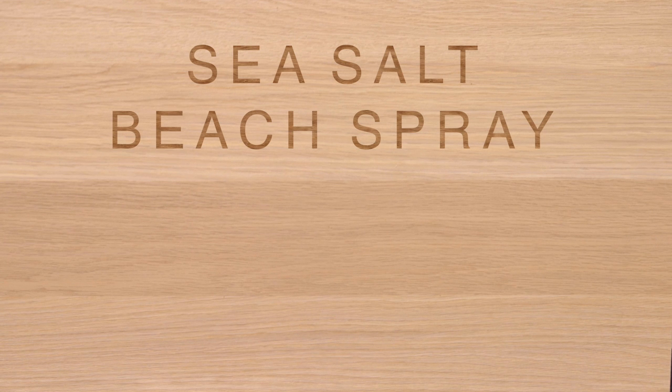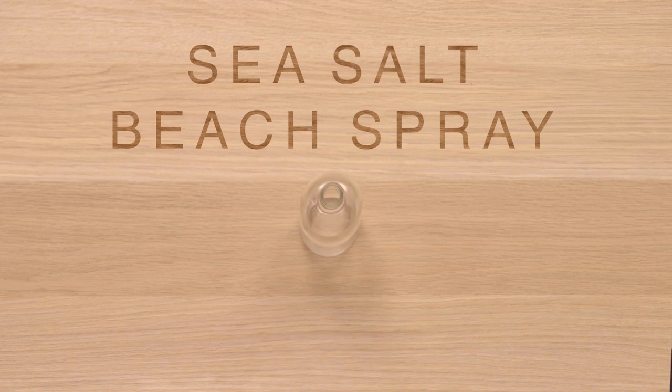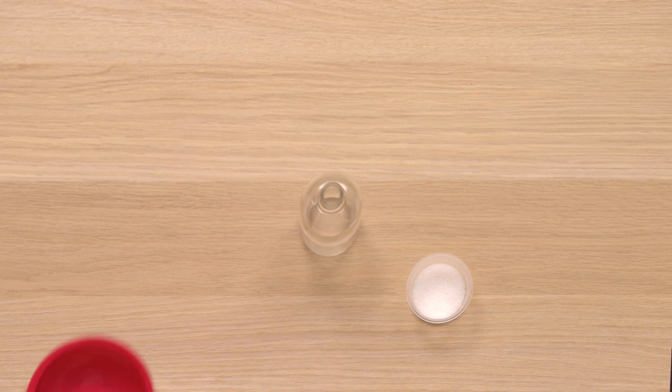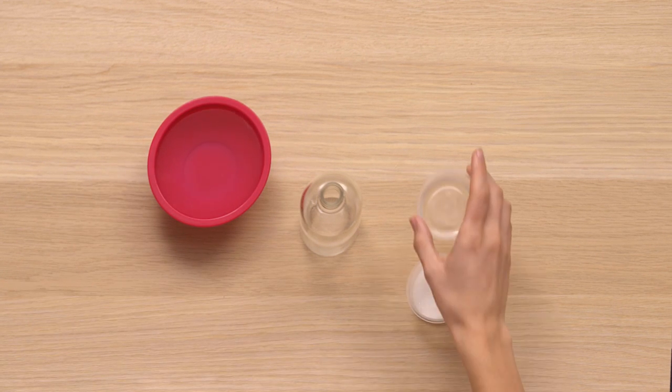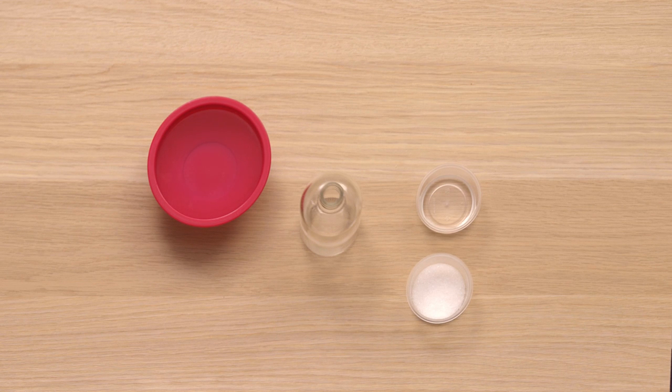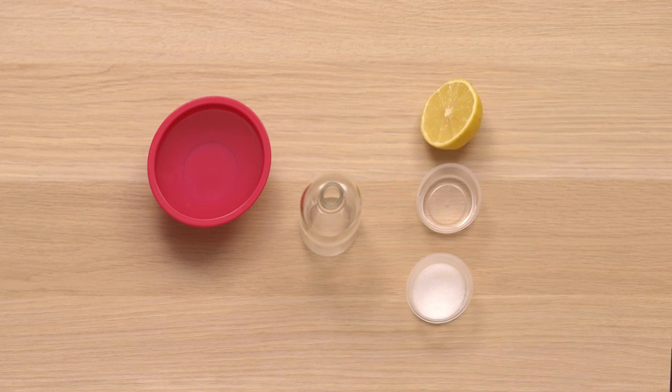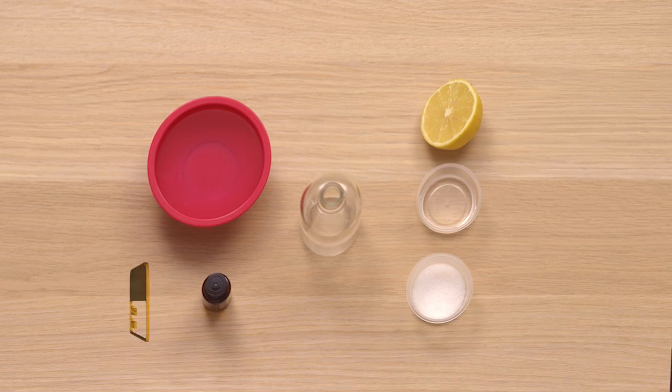Make your own sea salt beach spray with a clean spray bottle, one tablespoon all natural sea salt, one cup of warm water, two teaspoons of doTERRA fractionated coconut oil, one teaspoon of lemon juice, and two drops of lemon essential oil.